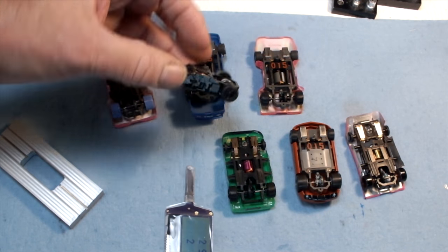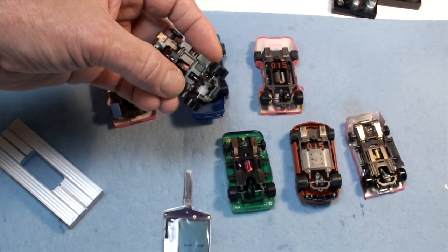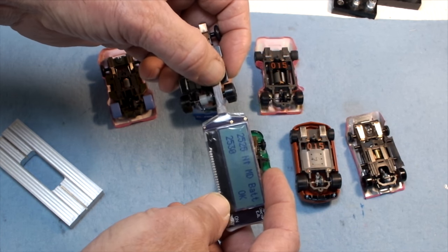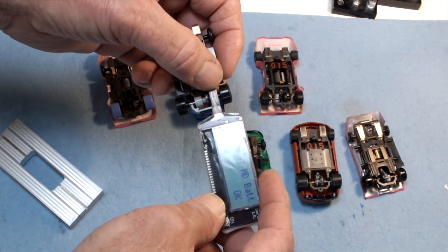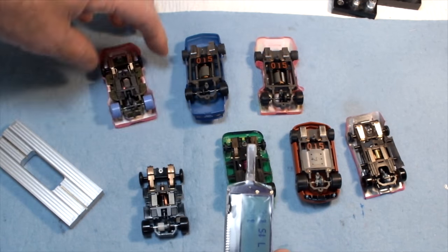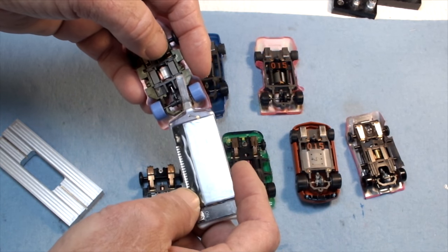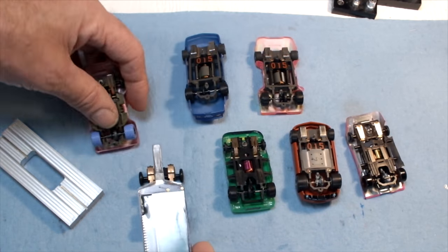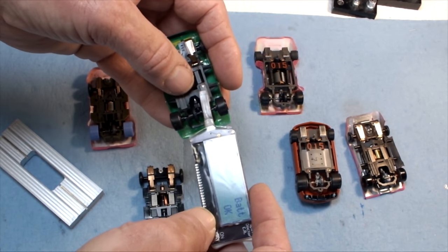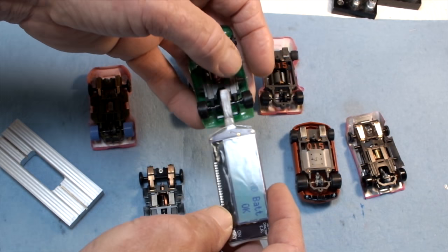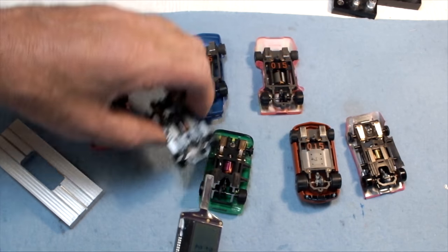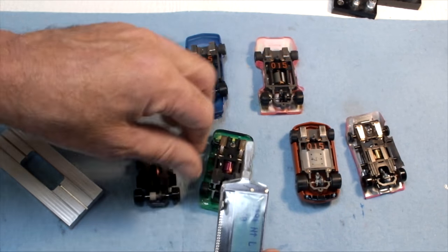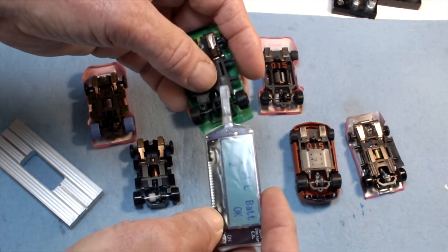Here we have a hopped up Tyco that has level 8 traction magnets in it and level 4 motor magnets, and the traction magnets are putting out about 2500 gauss. This particular one the same way, level 8, 2500 gauss. Go back to the Wizard level 10.